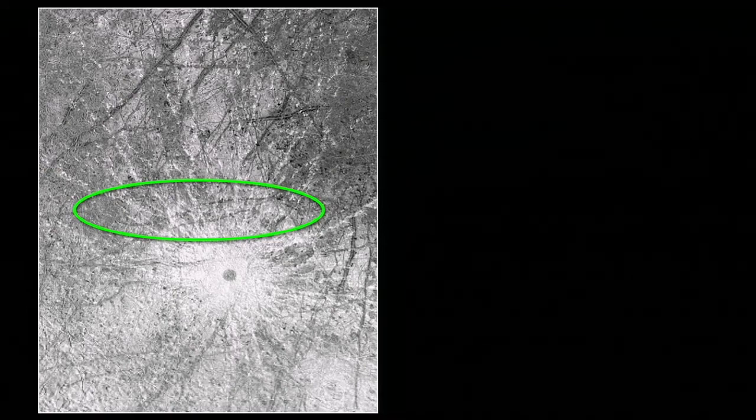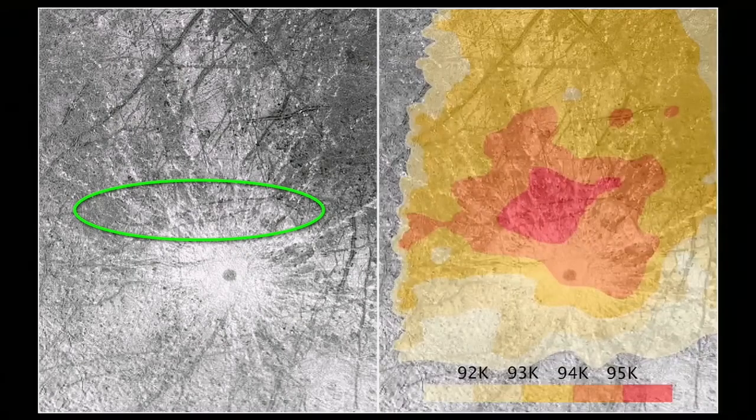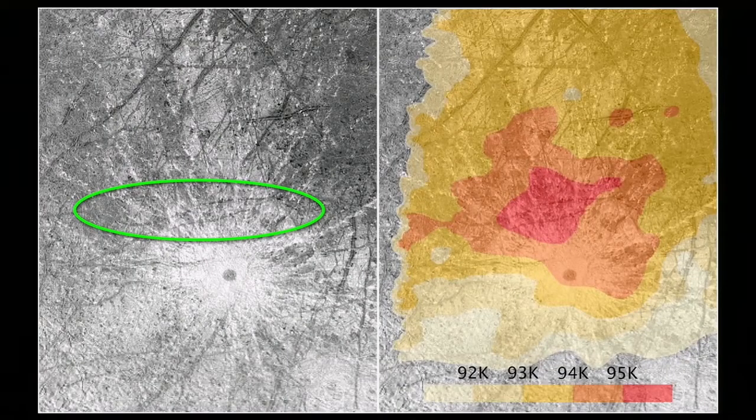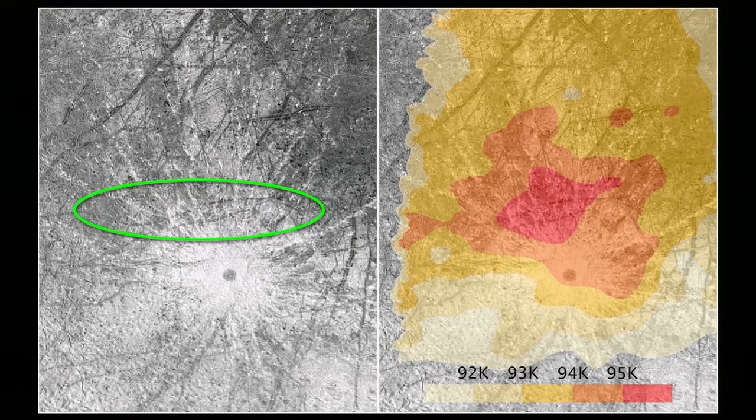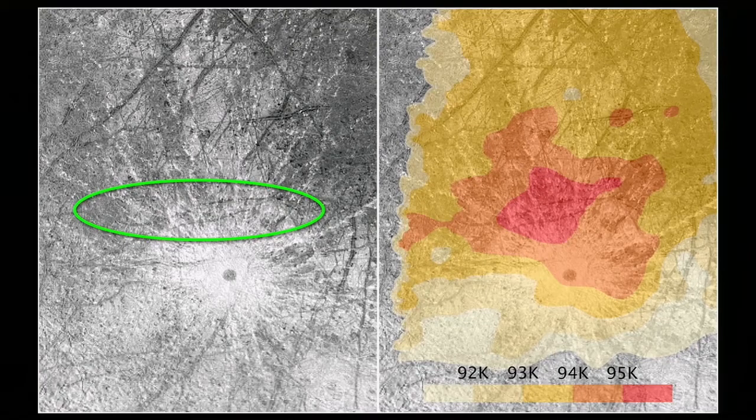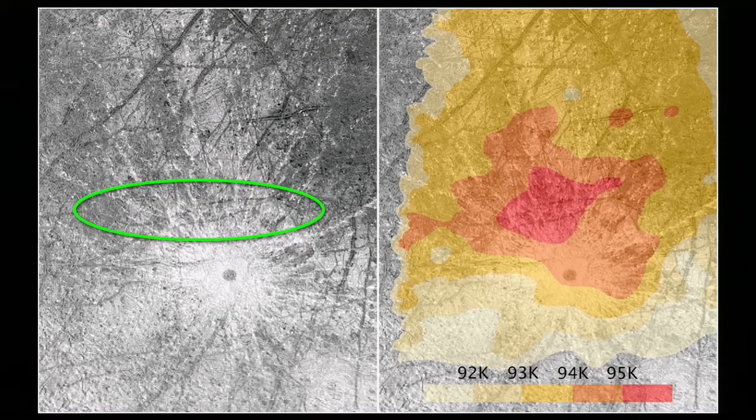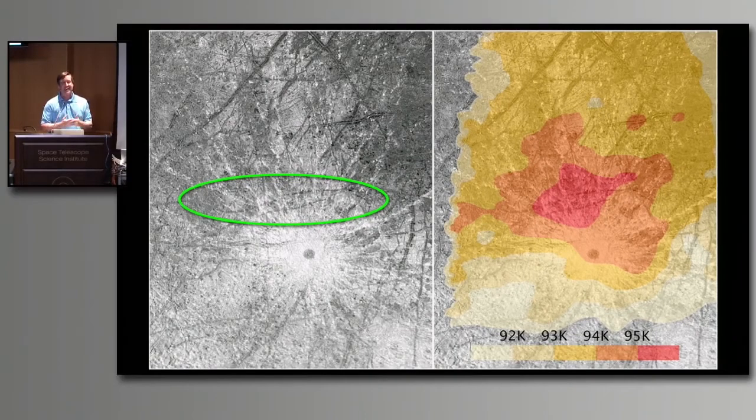Why would these cracks be emitting water vapor? Well, a temperature measure of the surface of Europa shows that that area is three degrees warmer than the rest. Now you have to recognize three degrees warmer is going from 92 Kelvin to 95 Kelvin, and this is an absolute scale, so this is minus a couple hundred degrees Fahrenheit. When I say warmer, I really should be saying three degrees less totally absolutely frigid.